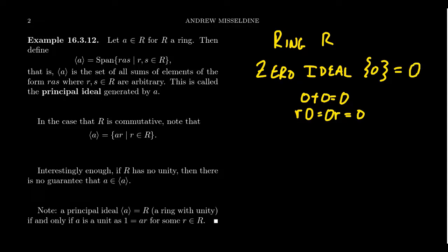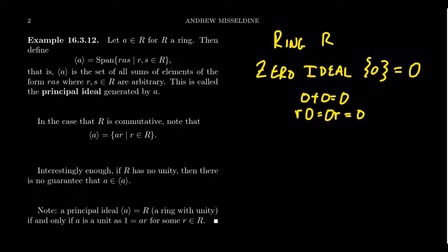As an abuse of notation, the zero ideal is often denoted simply as the symbol zero, because writing out the subset notation can be tedious. We do something similar in group theory — we often say the trivial group is just the element one, meaning the subset containing only the identity. We drop the set notation and call the element the name of the set; we'll do the same with the zero ideal.